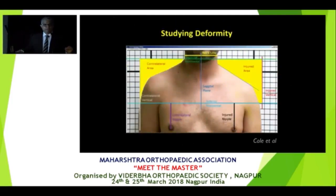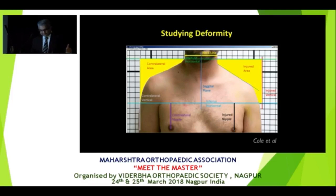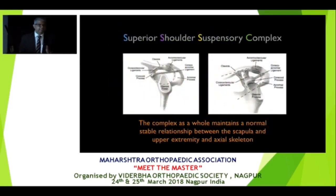There is this beautiful paper by Peter Cole where they have described indications of surgical intervention for scapular fractures and how to assess these patients in outpatients. If you look at such a patient, the first thing you will see is that the trapezius fold starts drooping, the injured nipple is at a lower level — the nipple droop sign is present — and when you look at the patient from behind, the normal medial border of the scapula is lost.